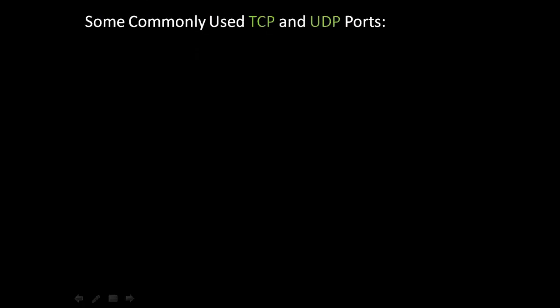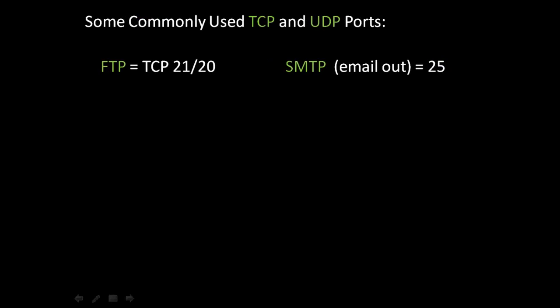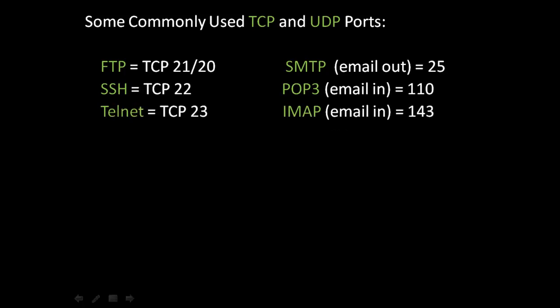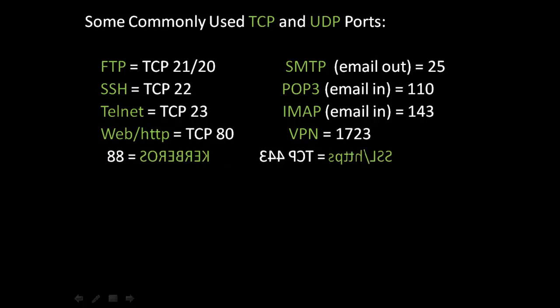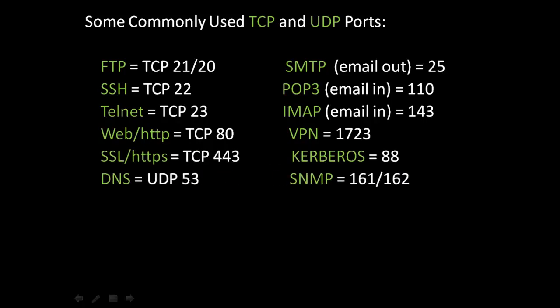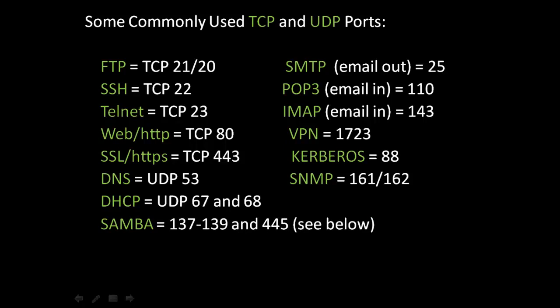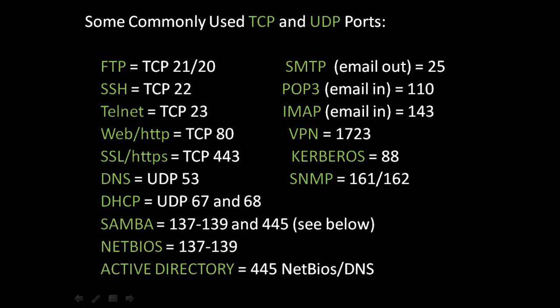Let's look at some commonly used TCP and UDP ports. FTP utilizes TCP 21 and 20. SMTP 25. SSH uses TCP 22. POP3 110. Telnet TCP 23. IMAP 143. HTTP uses TCP 80. VPN 1723. SSL or HTTPS uses TCP 443. Kerberos 88. DNS uses UDP 53. SNMP 161 and 162. DHCP uses UDP 67 and 68. Samba 137 to 139 and 445. NetBIOS 137 to 139. Active Directory 445 for NetBIOS.